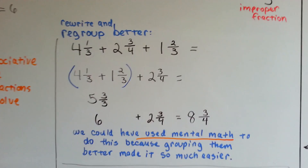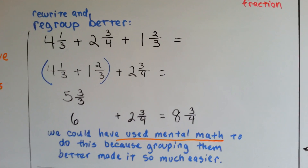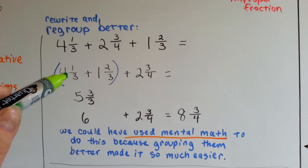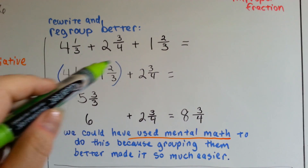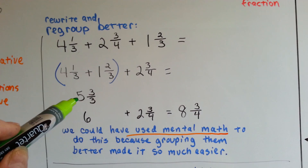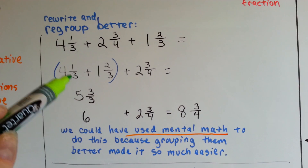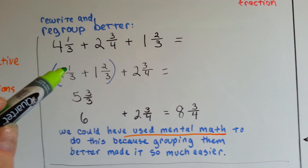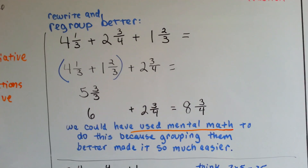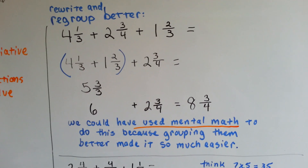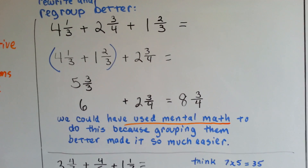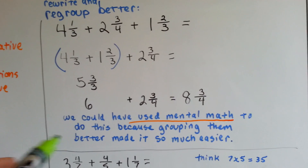We can also rewrite and regroup mixed numbers to be in a better position to add. 4 and 1 thirds can be grouped with 2 and 1 thirds. When we do that, we add the 4 and the 1 and get 5, and we add the 1 and the 2 numerators and get 3, giving us 3 thirds. We know that equals 1, because when the numerator and denominator are the same, it equals 1. So 5 and 3 thirds is 6.